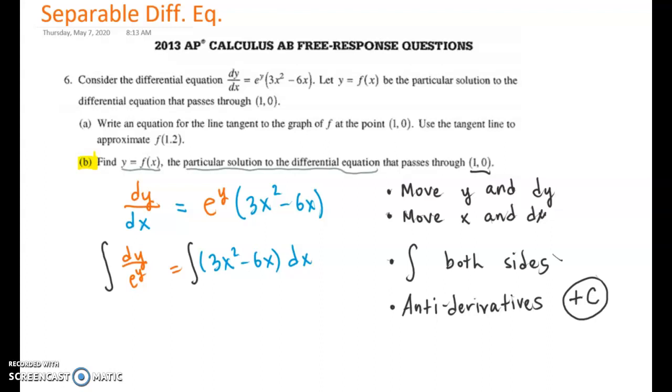If you had plus C on both sides they'd be different constants, and you could move it to the right side. I usually only write plus C on the x side. My goal is to keep the y side simple because eventually I'll solve for y. For this integral, I'm thinking of it as e^(-y)dy. You can think of u substitution where u = -y, so du = -dy. You'll get a negative sign when you do the antiderivative.